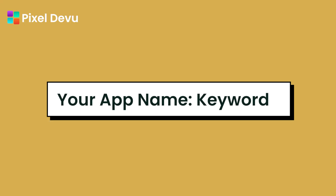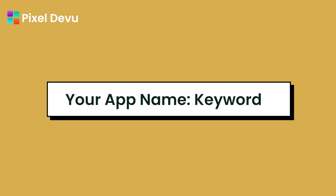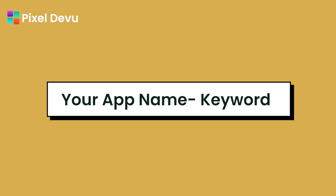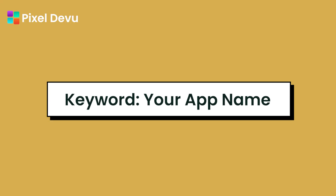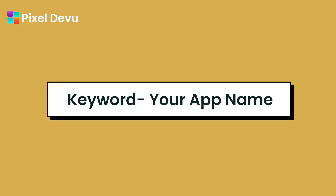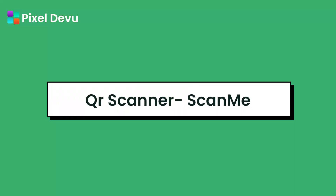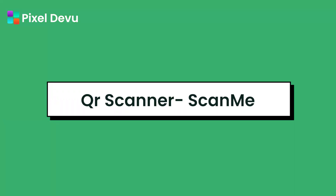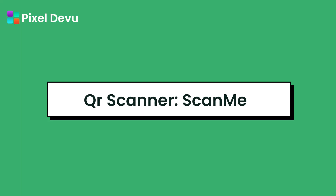You can use the format: App Name – colon – space – Keyword, or App Name – hyphen – space – Keyword. My more recommended format is: Keyword – colon – space – App Name, or Keyword – hyphen – space – App Name. For my QR Scanner application, I will use the title 'QR Scanner – Scan Me' or 'QR Scanner: Scan Me'. You can also perform A/B testing for your title.